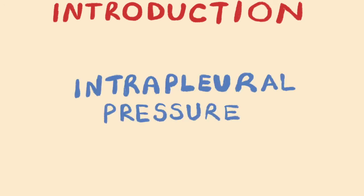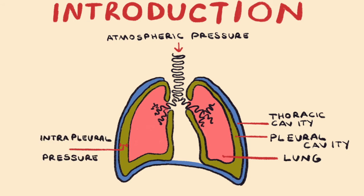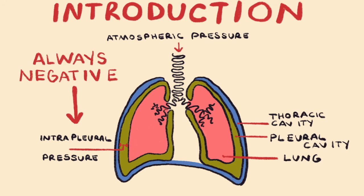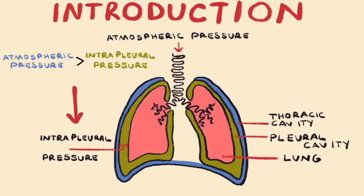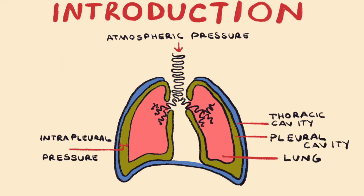Lastly, there is intrapleural pressure, which is the air pressure in the pleural cavity that surrounds the lungs. Intrapleural pressure is always negative — that is, less than atmospheric pressure. Therefore, the lungs end up sticking to the thoracic cavity via suction, thus preventing the lungs from ever collapsing.